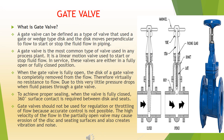What is a gate valve? A gate valve can be defined as a type of valve that uses a gate or wedge-type disc, where the disc moves perpendicular to flow to start or stop fluid flow in piping. A gate valve is the most common type of valve used in any process plant. It is a linear motion valve used to start or stop fluid flow. In service, these valves are either in a fully open or fully closed position. When fully open, the disc is completely removed from the flow, resulting in virtually no resistance to flow and very little pressure drop.